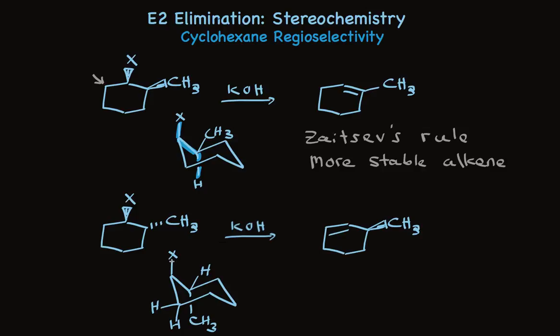However, there is an anti-coplanar arrangement between the halide and this hydrogen on its other side. So loss of this alpha hydrogen together with the halide makes the alkene I've shown here. The reaction is highly regioselective because of the stereochemistry of the reactant.